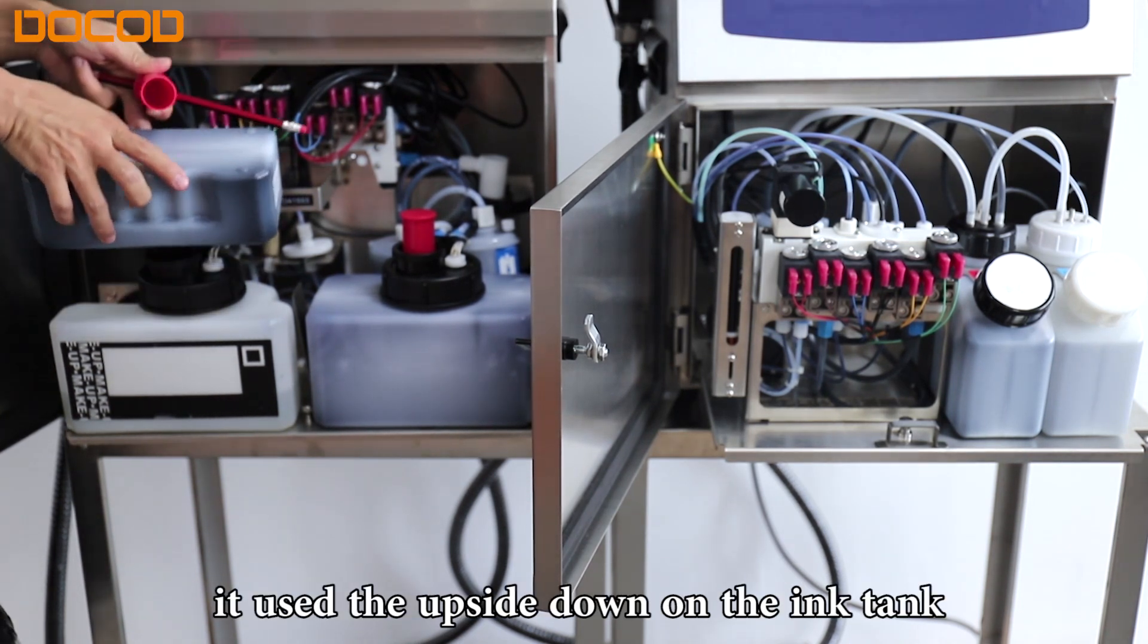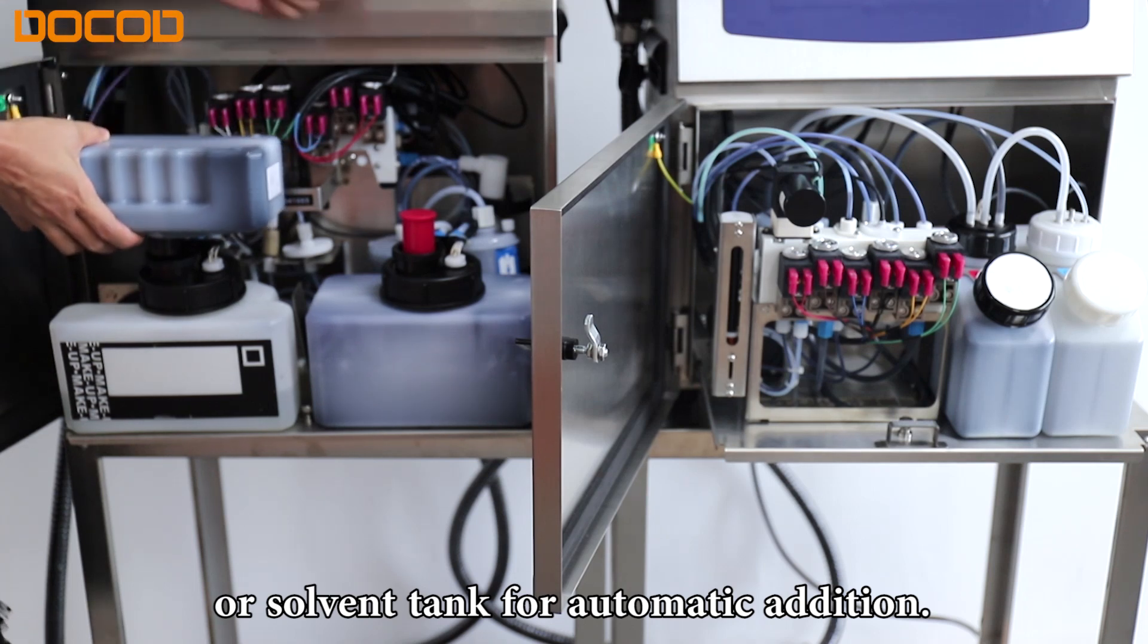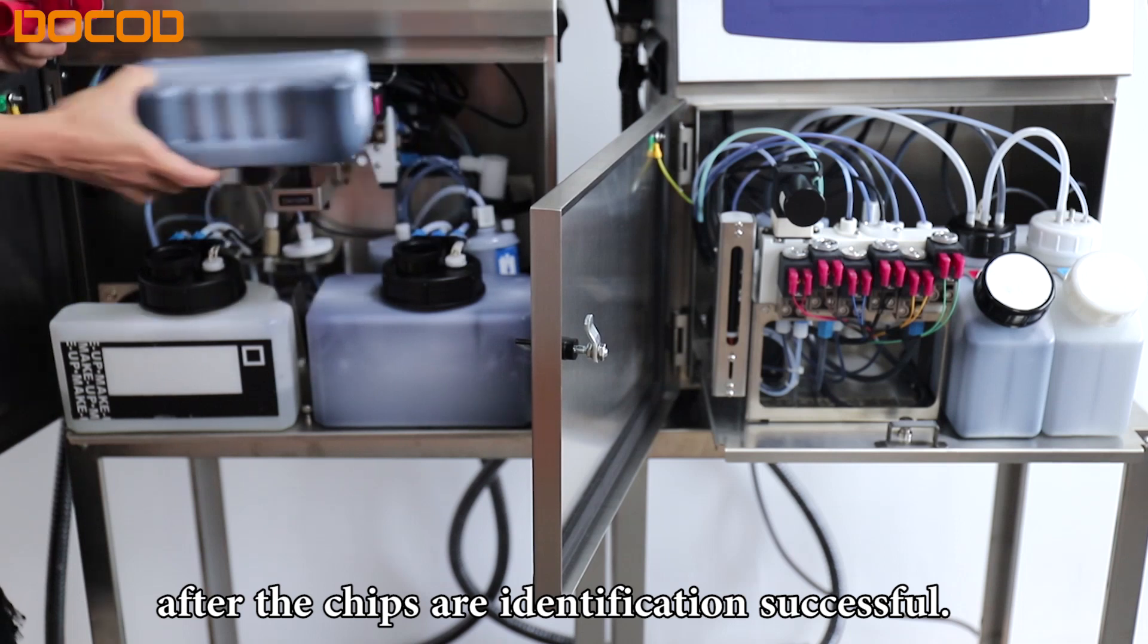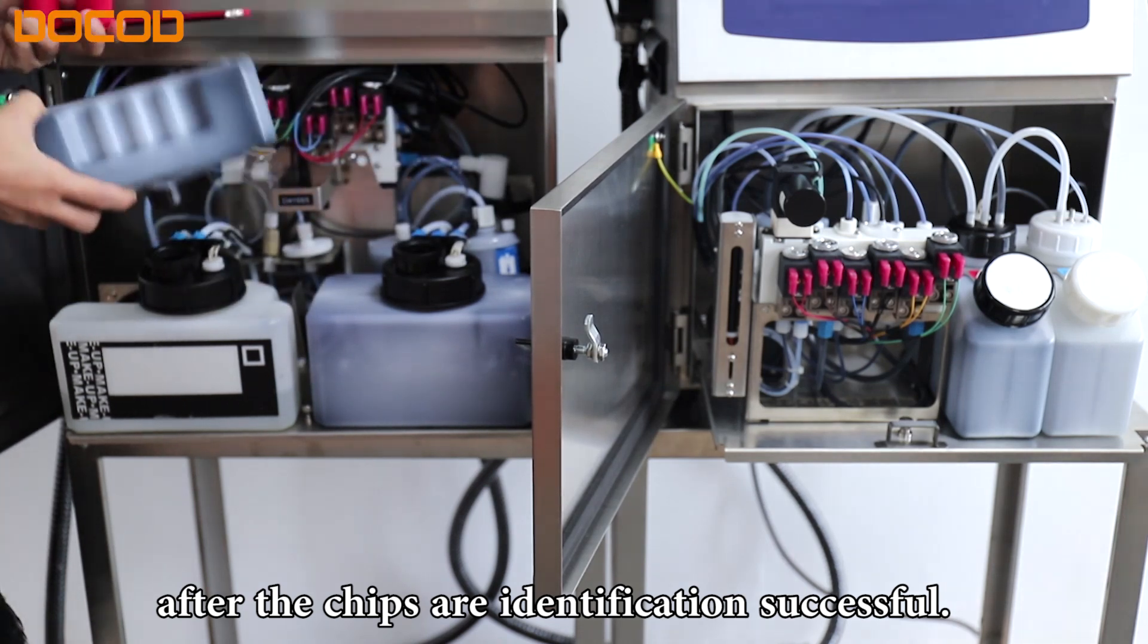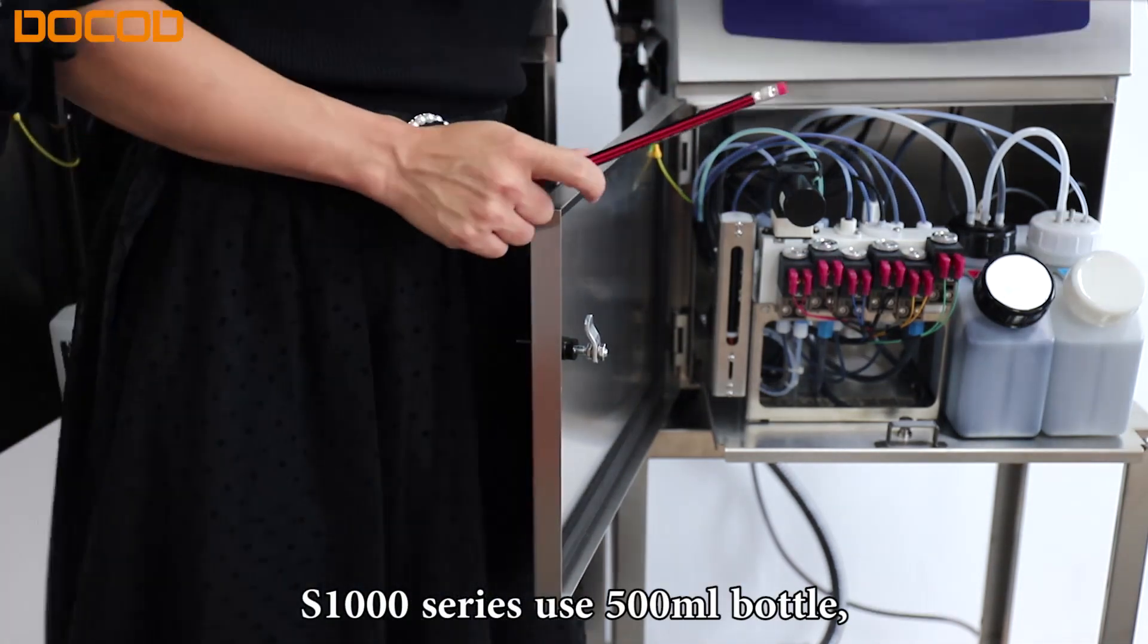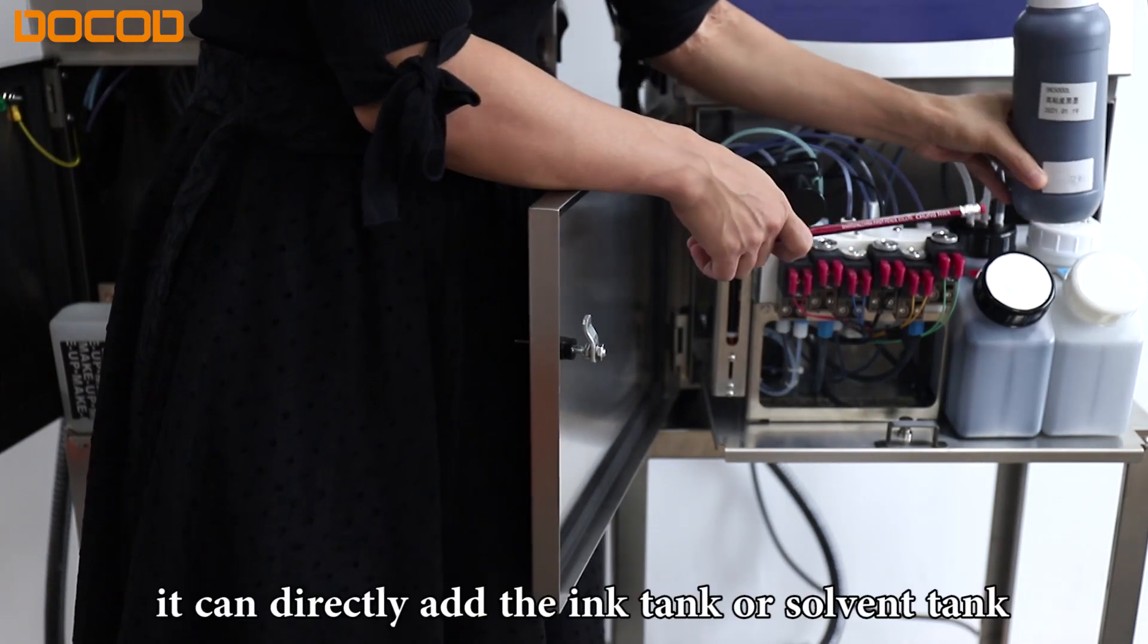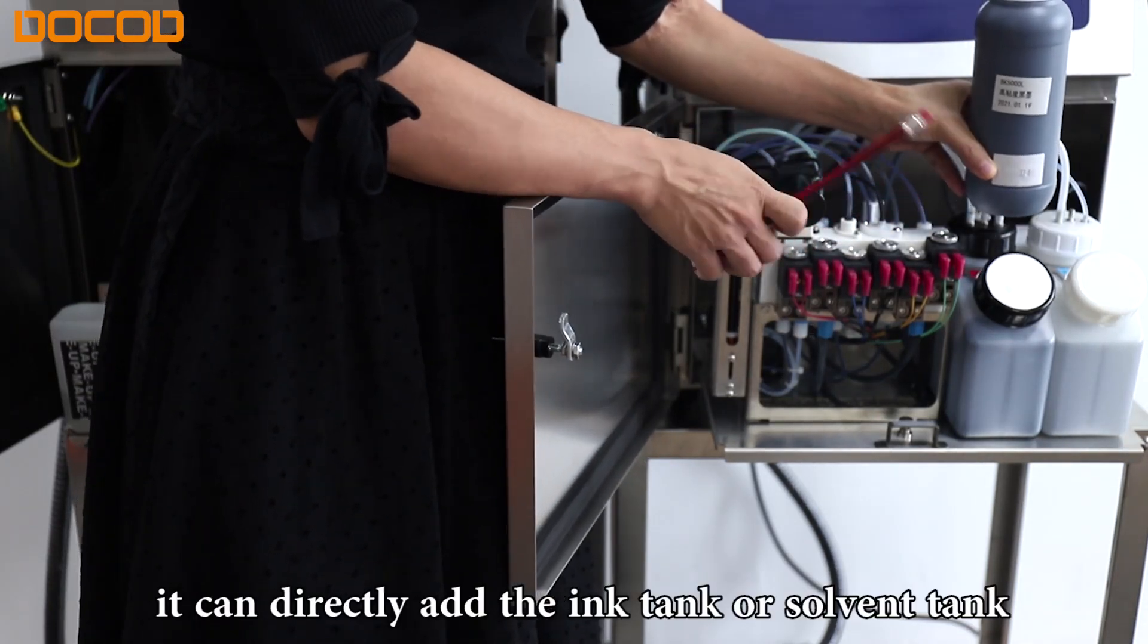It uses the upside down ink tank or solvent tank for automatic addition. All consumables need to be added after the RFID identification is successful. X1000 uses 500ml bottle. It can directly add the ink tank or solvent tank.